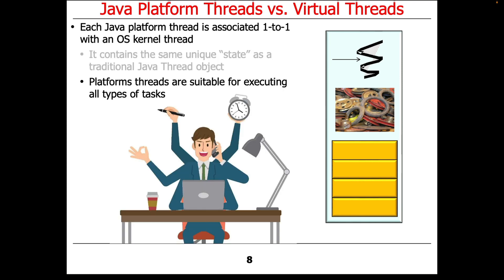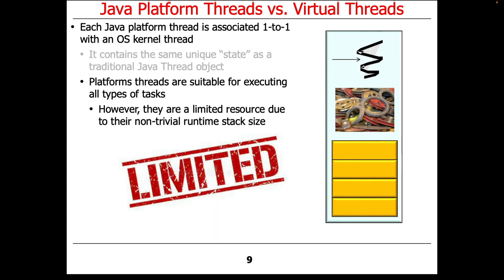Platform threads can be used to execute pretty much anything, although they're mostly useful for I/O-related stuff — but you can use them for anything. However, the tricky issue with a platform thread is that they use a non-trivial amount of runtime stack size in the operating system kernel, and therefore they become a limited resource. You can't have a million Java threads — that would start to slow things down, and even much less than a million threads on most platforms will start to slow things down quite a bit.